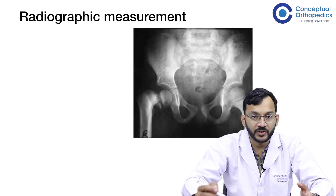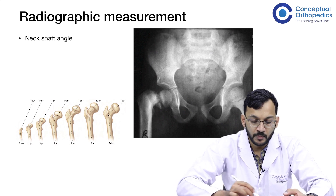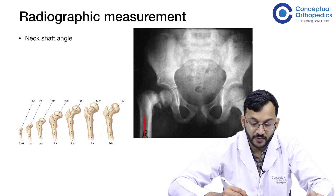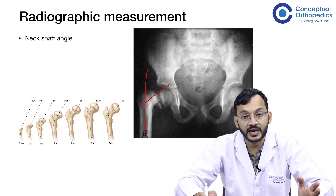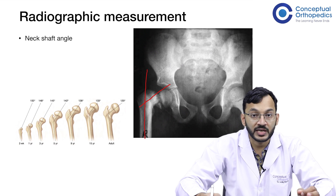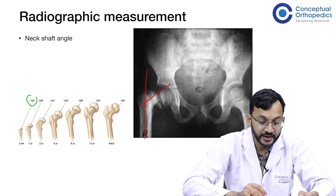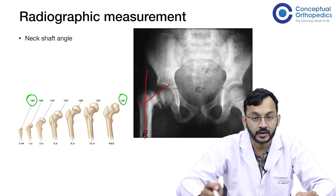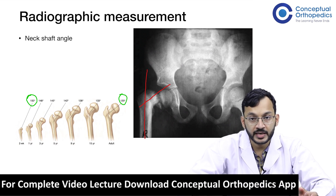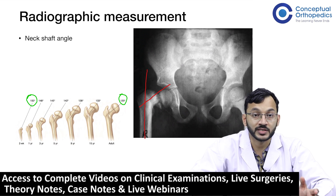Regarding radiographic measurements, the neck shaft angle is drawn between the long axis of the femoral shaft and the long axis of the femoral neck. In children, this angle is 150 degrees at birth and gradually decreases to approximately 120 degrees in adulthood. The normal adult range is 120–135 degrees. Anything less than 120 degrees is considered abnormal and is termed coxa vara.